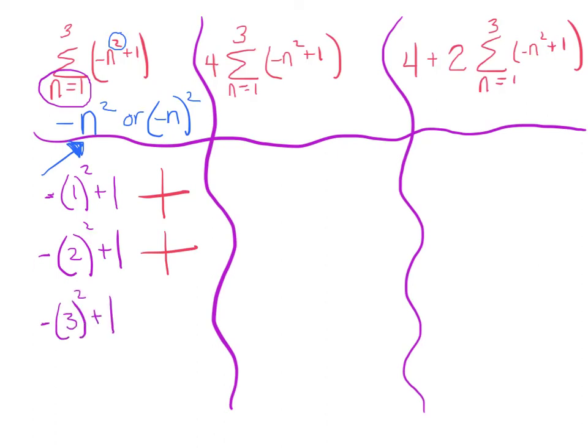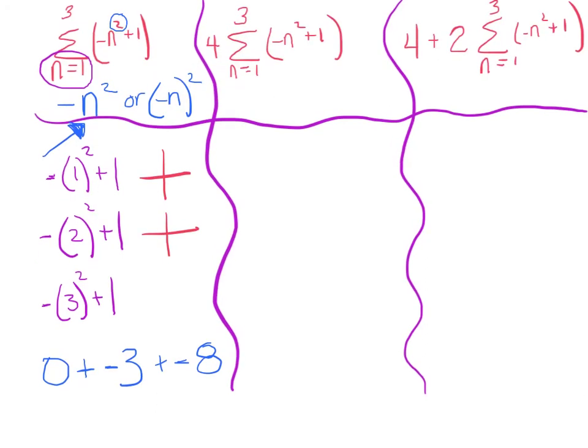So when I substitute this in, it is negative 1 squared plus 1 plus negative 2 squared plus 1 plus negative 3 squared plus 1. And now we're going to quickly evaluate each of those. 1 squared is 1. A negative makes it a negative 1. And a negative 1 plus 1, of course, is 0. 2 squared is 4. And the negative in front makes it negative 4 plus 1 is negative 3. And 3 squared is 9. Negative 9 plus 1 is negative 8. So I would say this has a sum of negative 11.